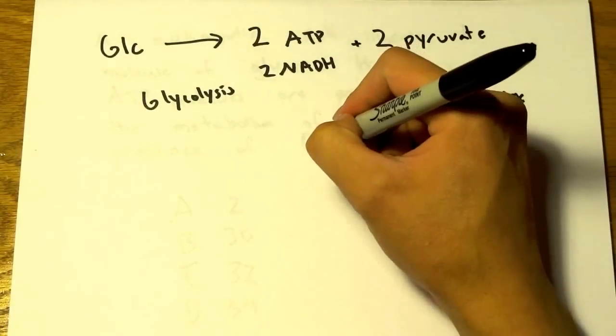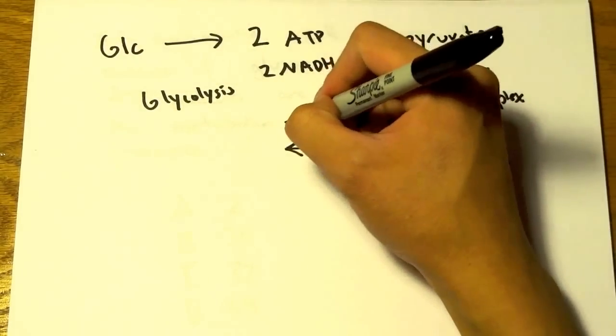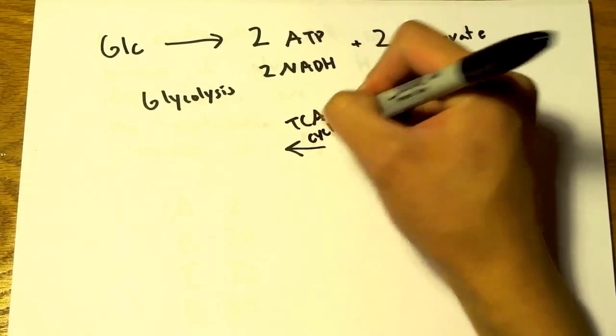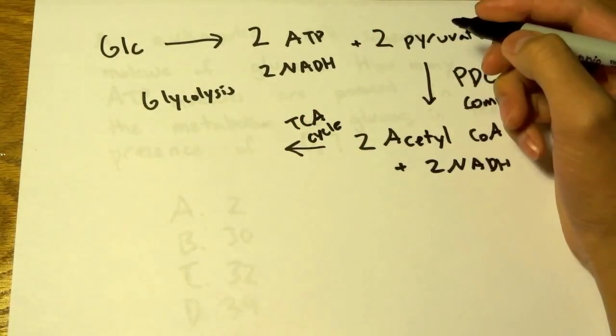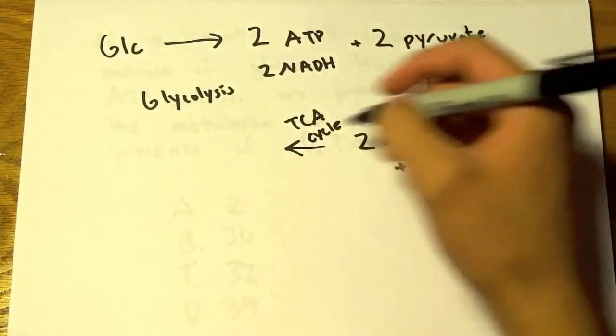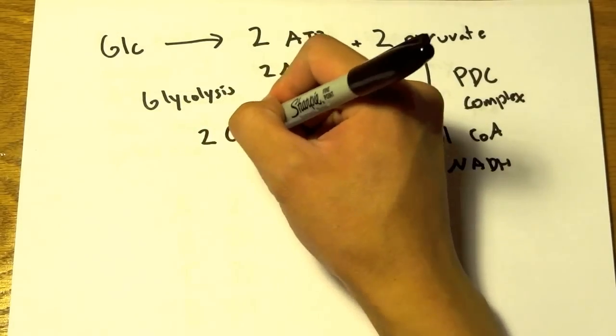These 2 acetyl-CoAs go into the TCA cycle, otherwise known as the Krebs cycle. What are the byproducts? We get 2 CO2,